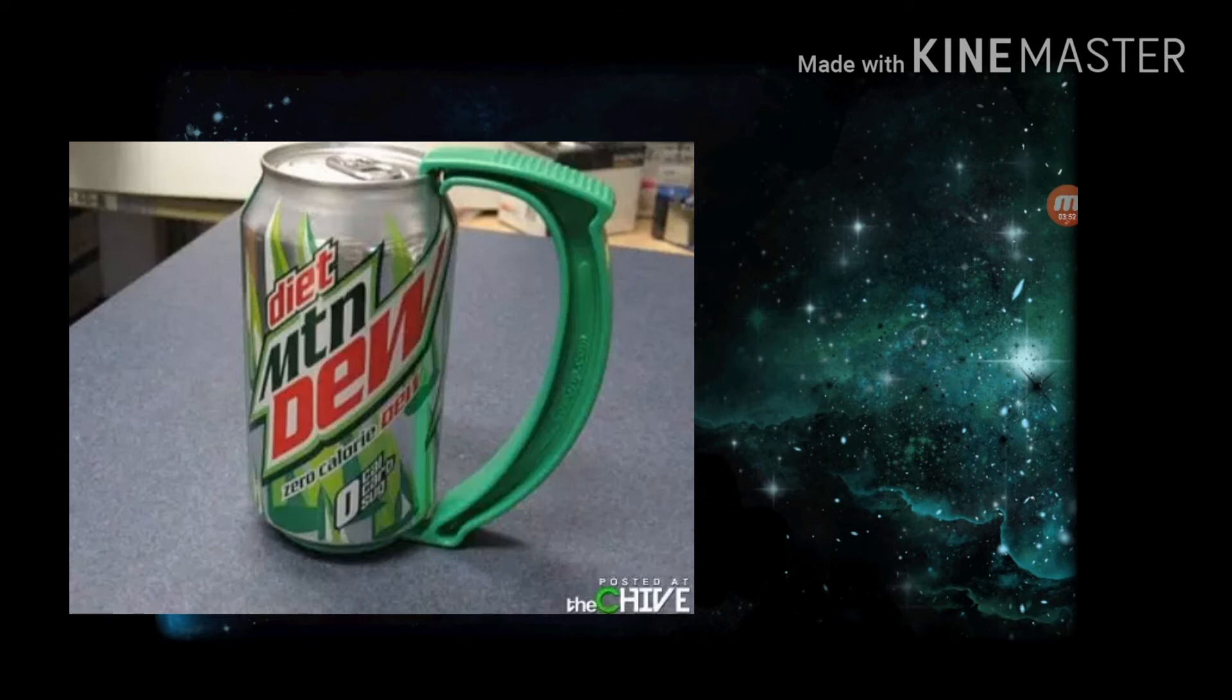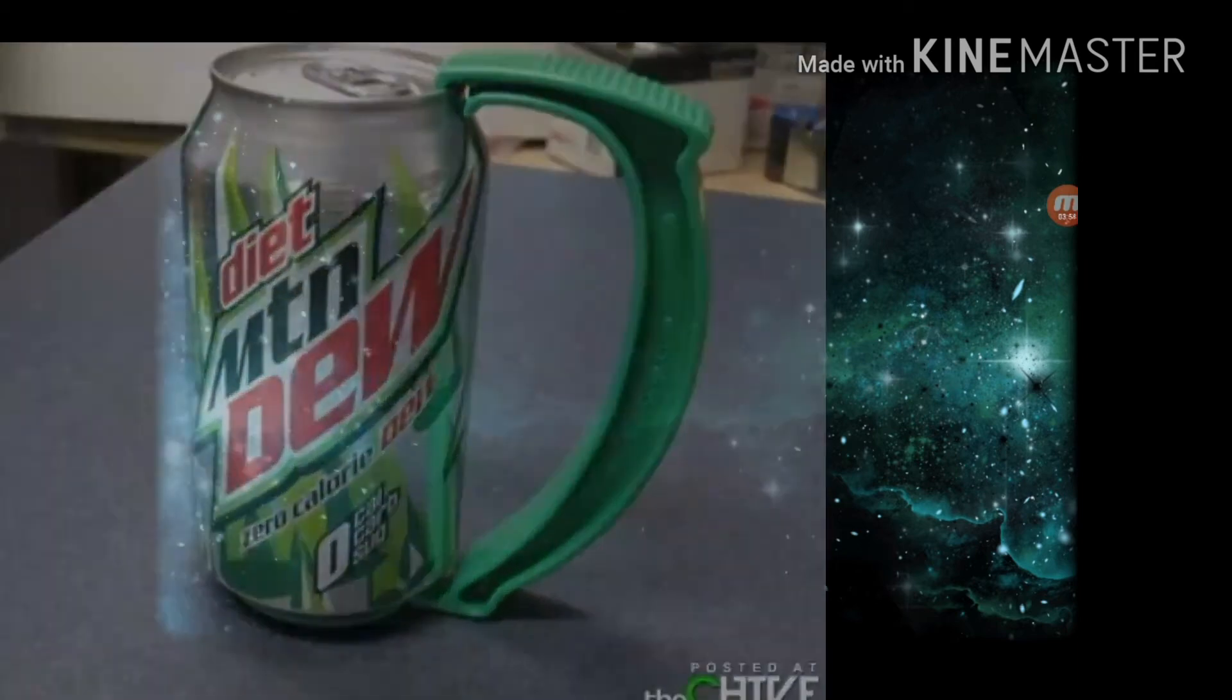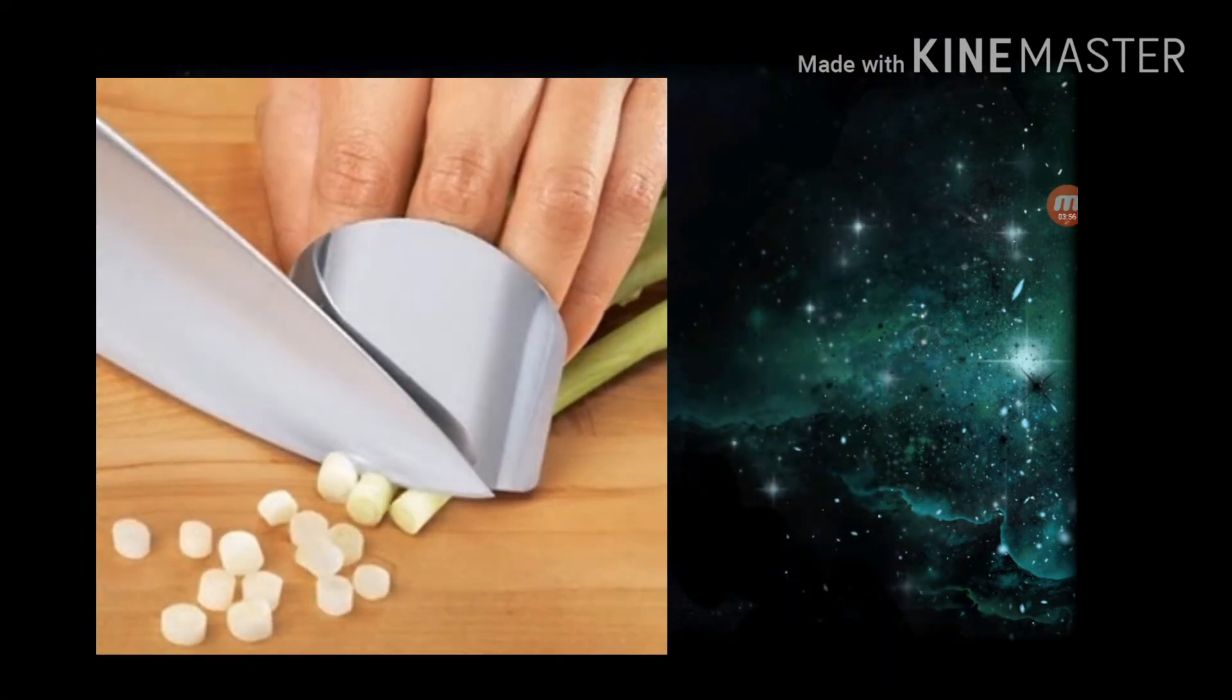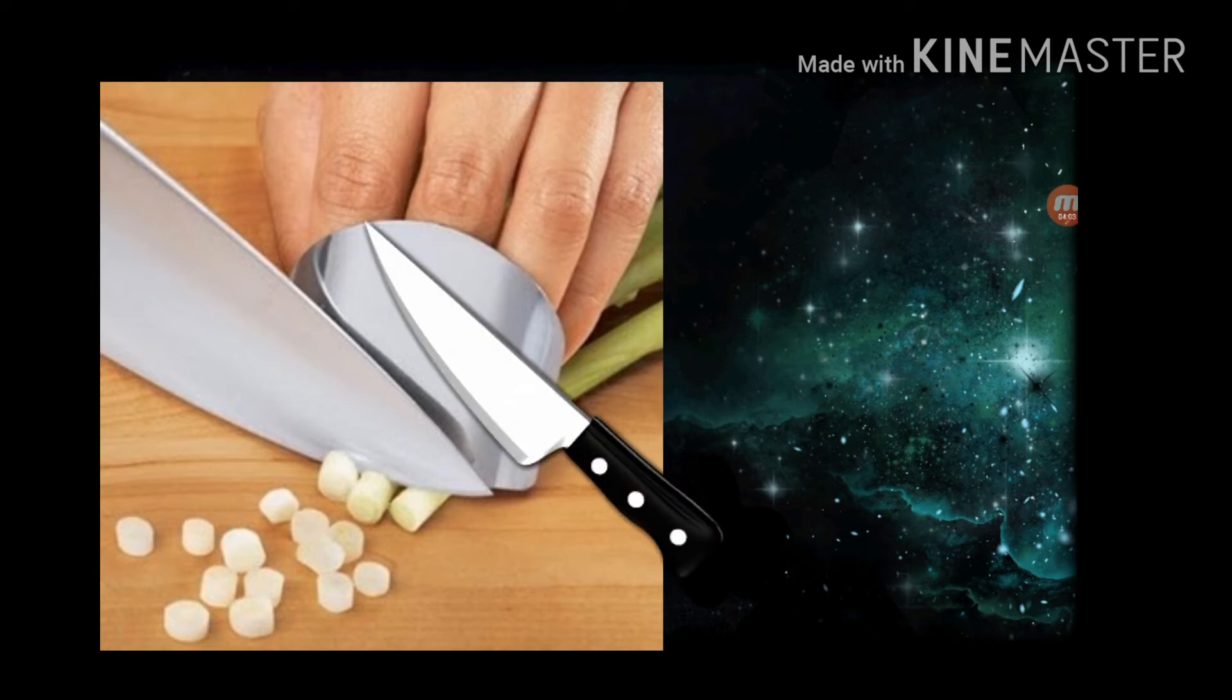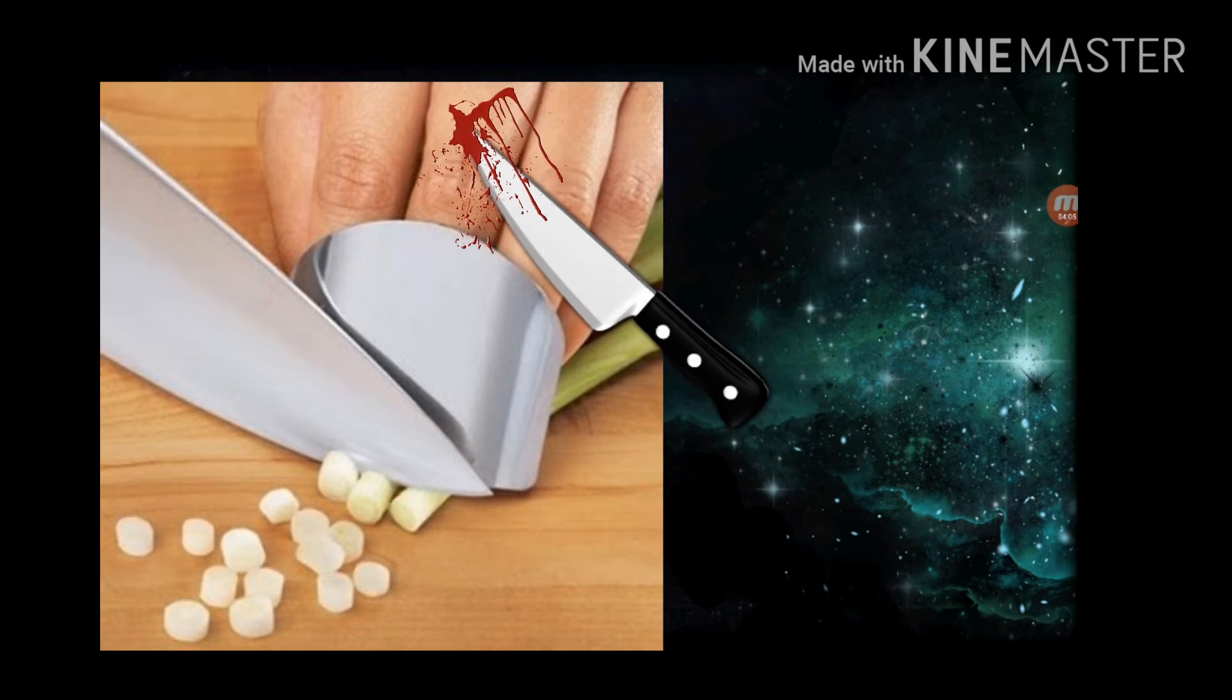This image looks to be a shield. If you're chopping a vegetable and you've got that thing in front of your fingers, if you misplace the chop it's going to hit the shield and not your hand. That would save a lot of cuts and would do a really good job.